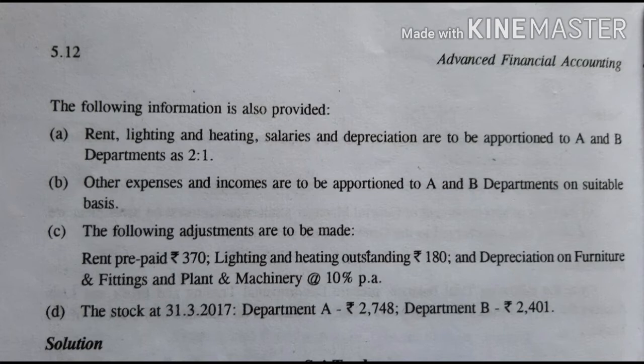The following adjustments are to be made: Rent prepaid: 370 rupees. Lighting and heating outstanding: 180 rupees. Depreciation on furniture and fittings and plant and machinery at 10% per annum. The stock at 31st March 2017: Department A: 2,748 rupees, Department B: 2,401 rupees.